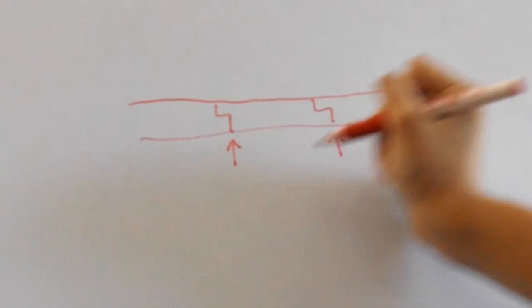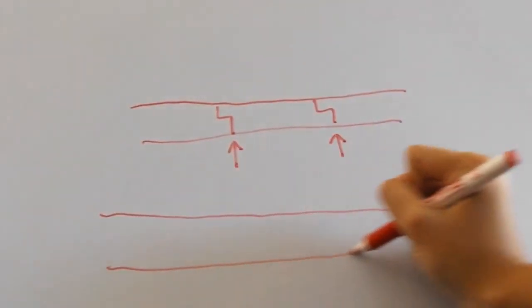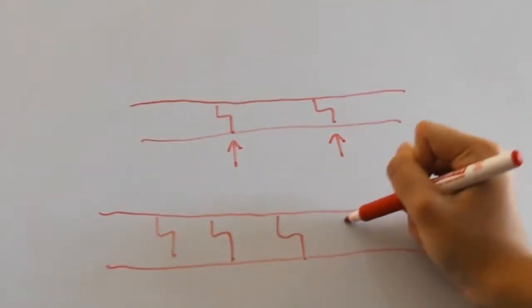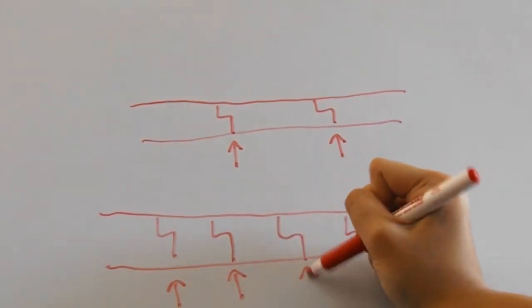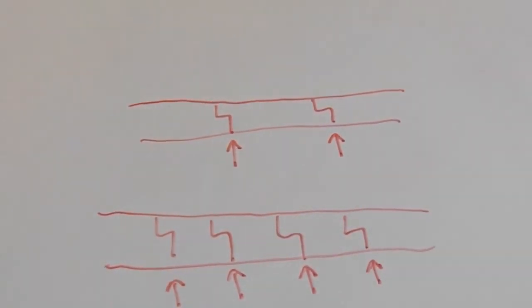So what happens is a protein called a restriction enzyme cuts the DNA at certain sites. For example, one person might have this particular sequence at two sites in his DNA, while another person has it at four sites in his DNA. We're all different.